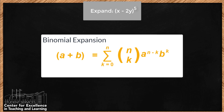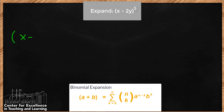Working from the formula, if our problem is x minus 2y to the fifth power, we can just replace in the formula any a's with x and any of the b's with negative 2y. We're going to go from k=0 to n. In our case, n is 5. n is always the power you're working with.